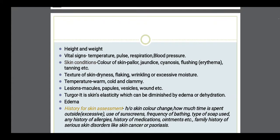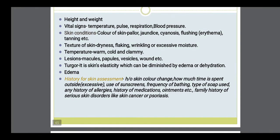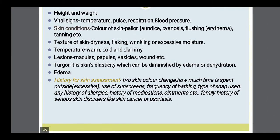This is also part of inspection. Start first with the skin condition. In that you have to see the color of the skin: pallor means pale skin, jaundice is yellowish skin, cyanosis is bluish tinge of the skin, flushing is redness of the skin due to disease or vasodilation, and tanning — whether present or not. Then texture.